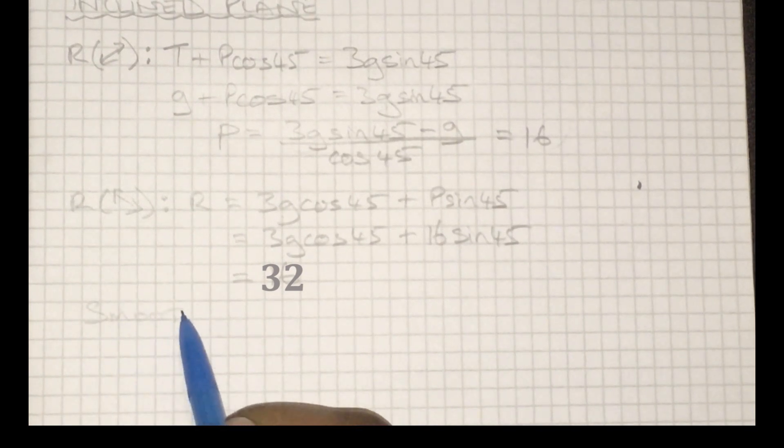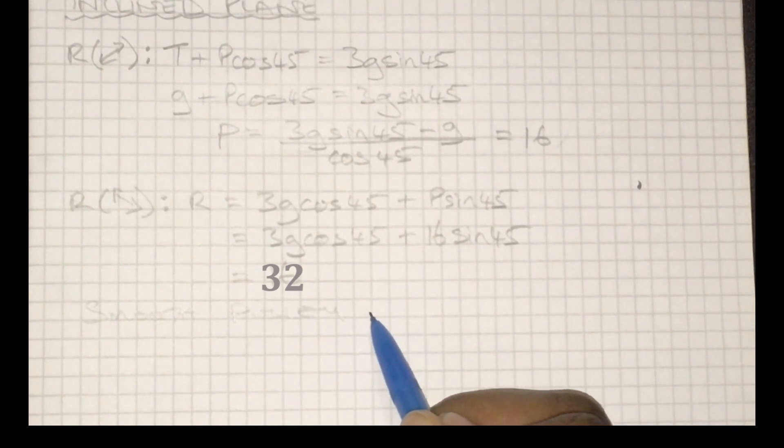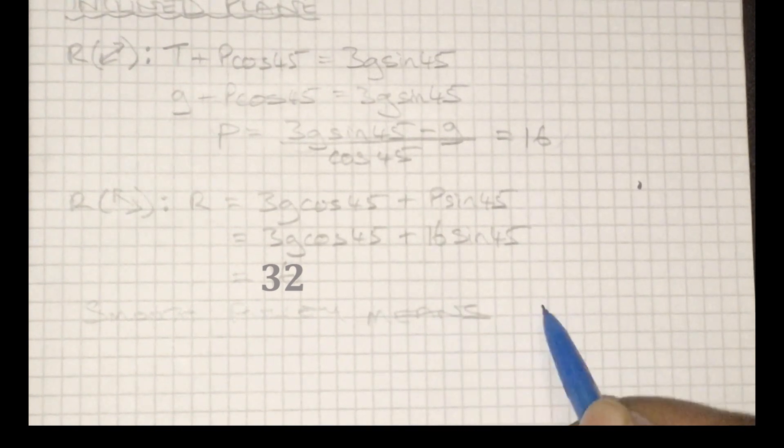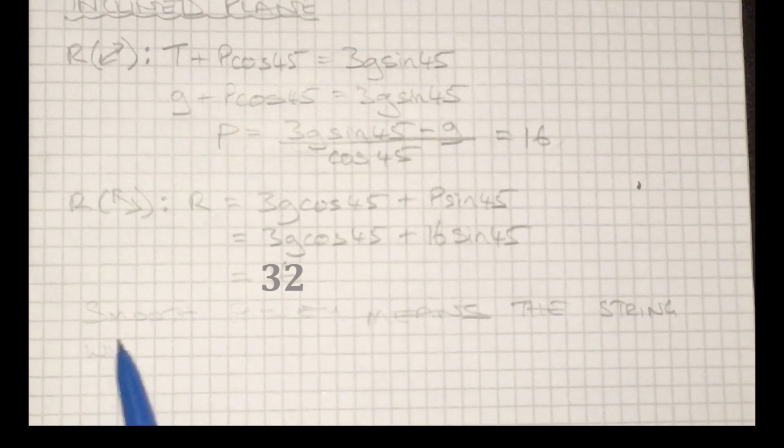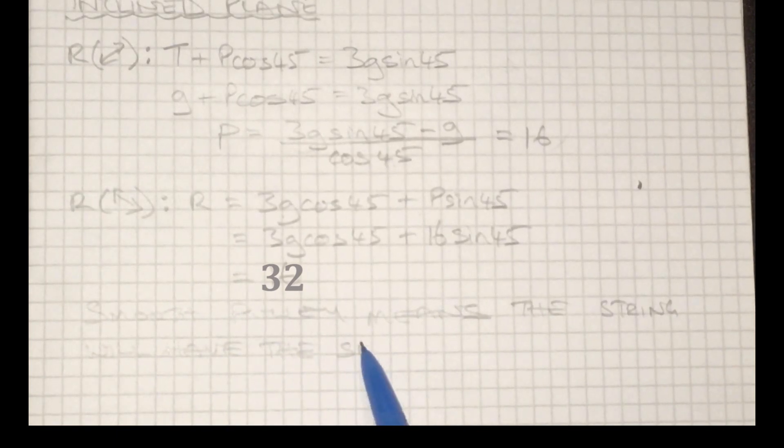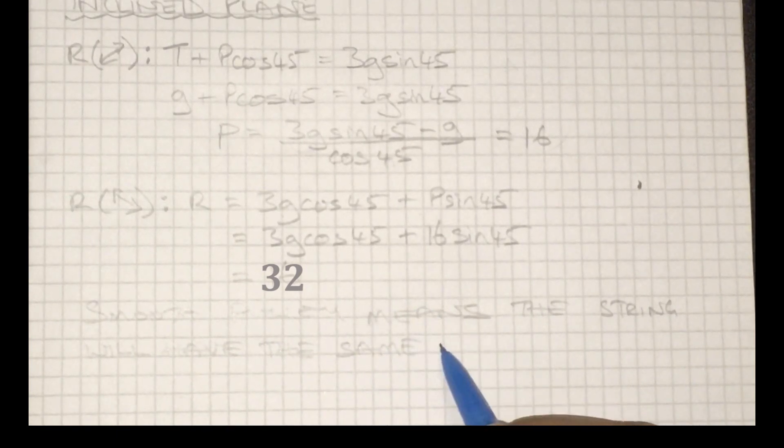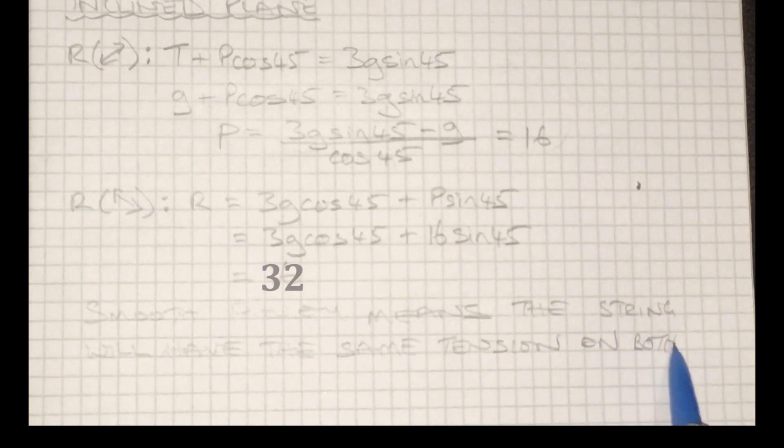And so the final part of the question has asked us to state any assumptions we've made around the pulley being smooth. So the assumption that we've actually made, the modeling assumption we've made, is that the tension is going to be the same on both sides of the pulley - the tension in the string is the same in both directions.